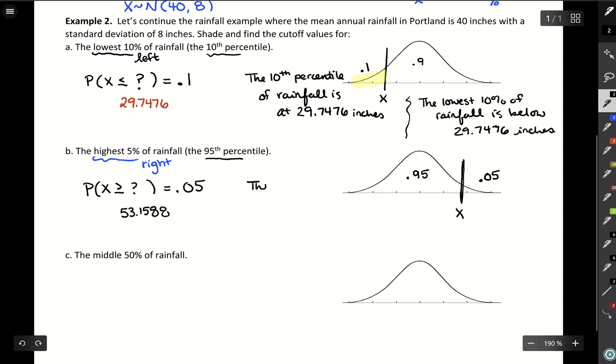So the highest five percent of rainfall is above 53.1588 inches.